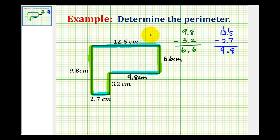And now that we have the length of all of the sides, we can determine the perimeter of this polygon by adding the lengths of all of the sides. So to make sure that we add all of these sides, let's start with 12.5 and work our way around the polygon clockwise.